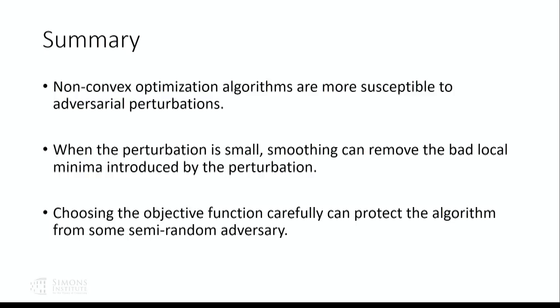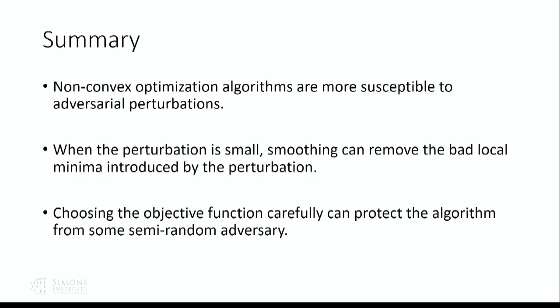There are many open problems — these are just two very preliminary examples. There are many other models of corruption; for example, the Huber model of corruption mentioned many times in this workshop — can we handle that kind of model for a non-convex optimization problem? We also want more efficient algorithms. The algorithms discussed are polynomial time, but they are not as fast as their non-robust counterparts. Can we have algorithms with similar performance that are very practical? Thanks.